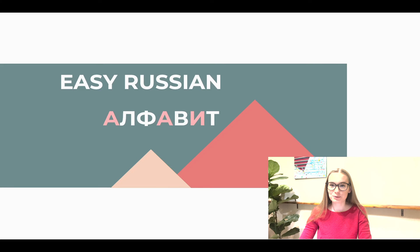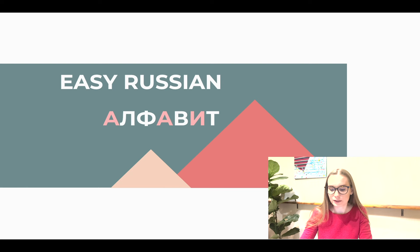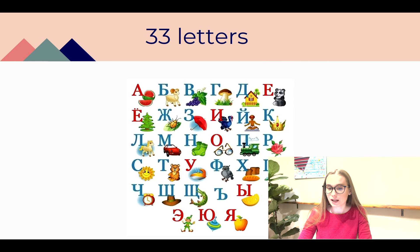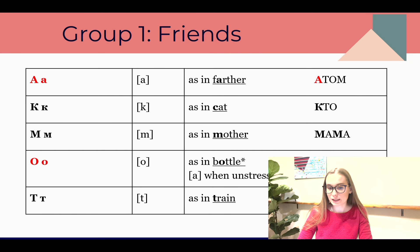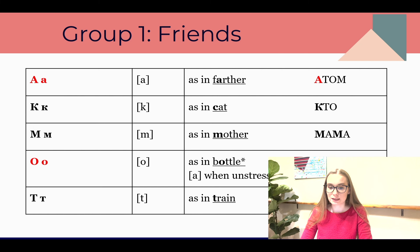Hello students, welcome to our first lesson. Let's begin from the alphabet. In Russian, 'alphabet' means alphabet. The Russian alphabet has 33 letters, and today we will learn how to read and pronounce them. We divide the Russian alphabet into four groups.